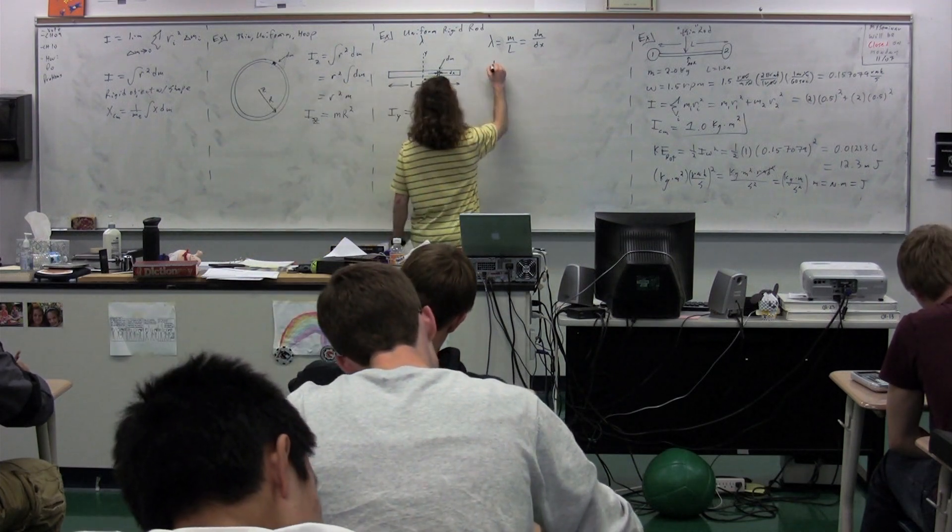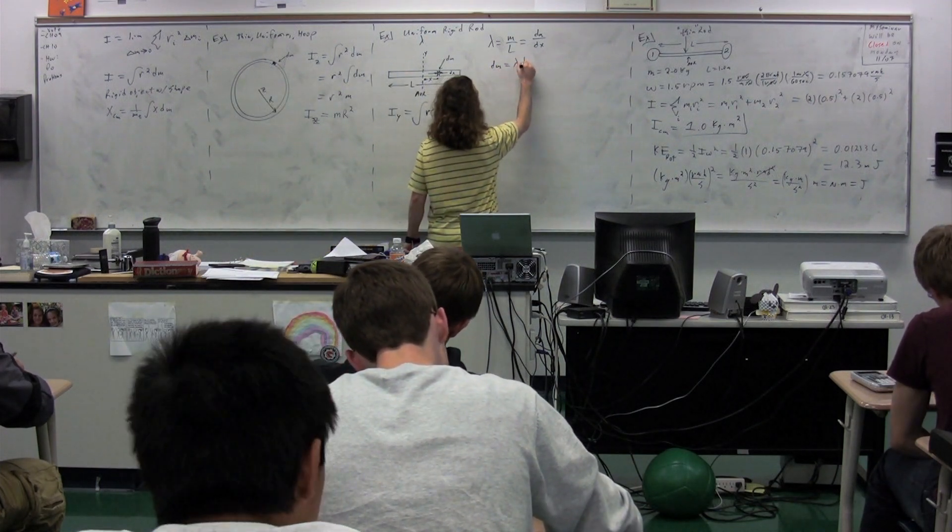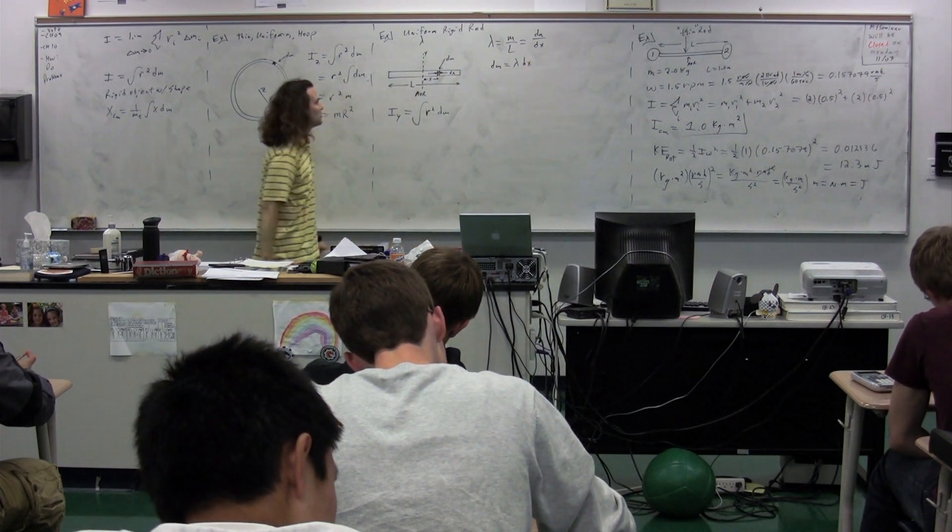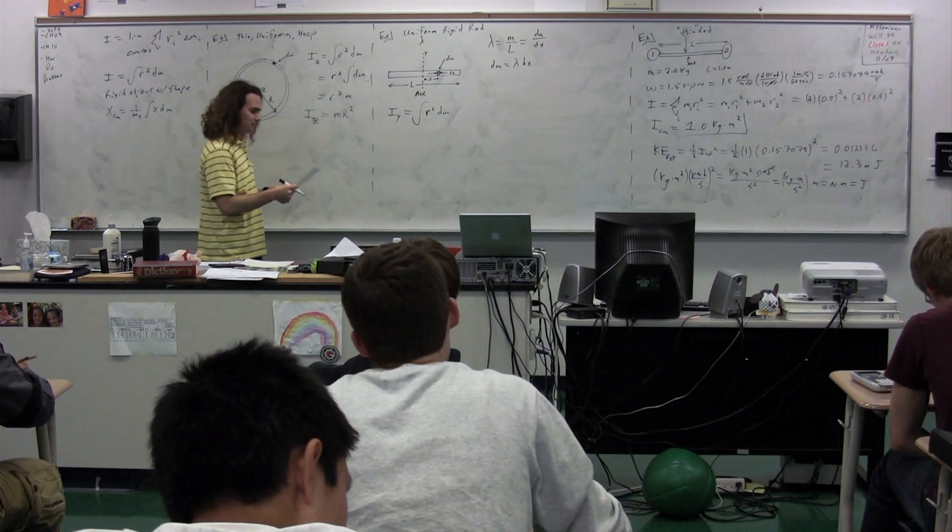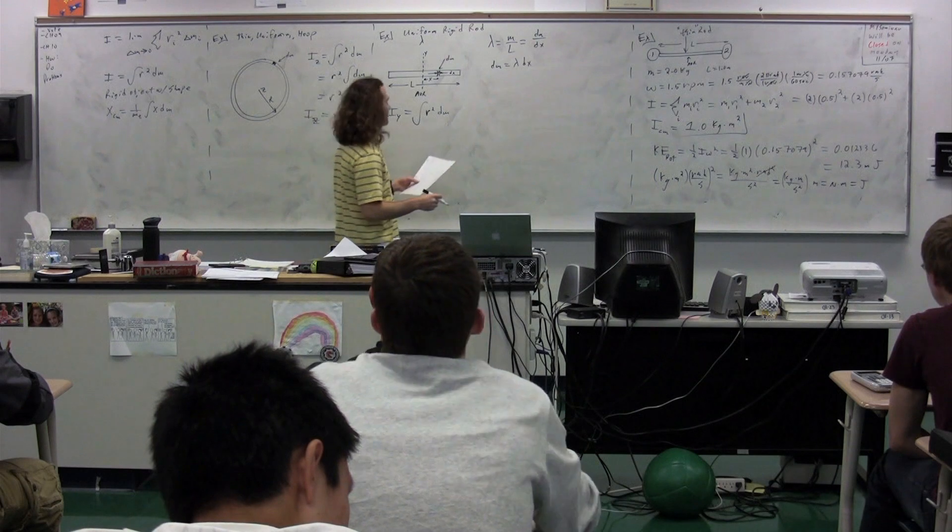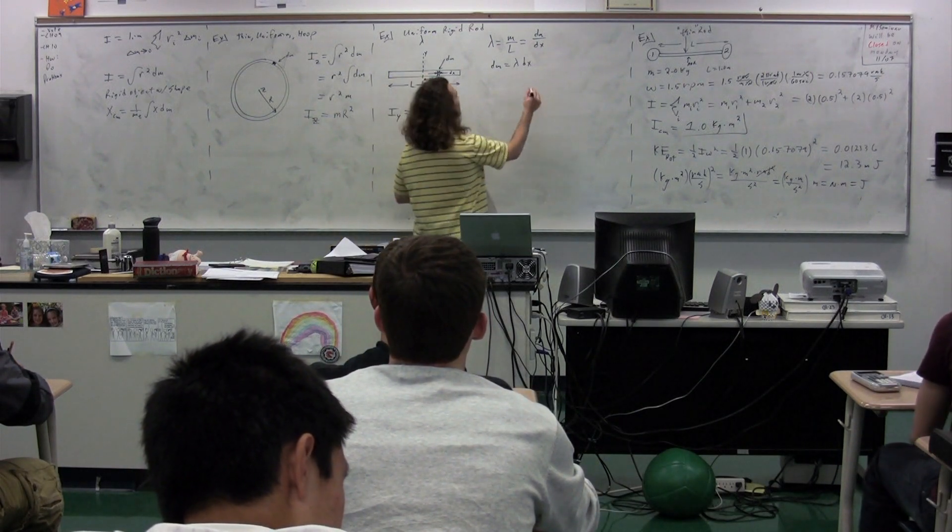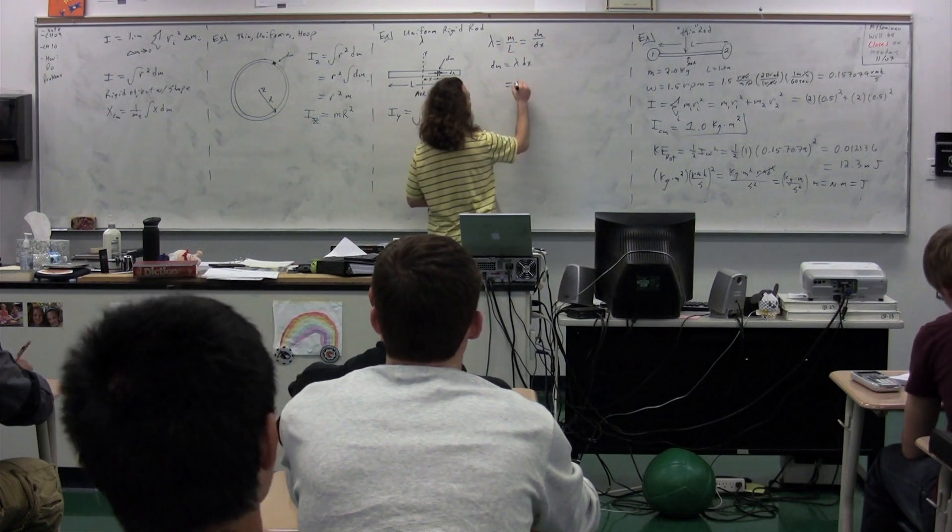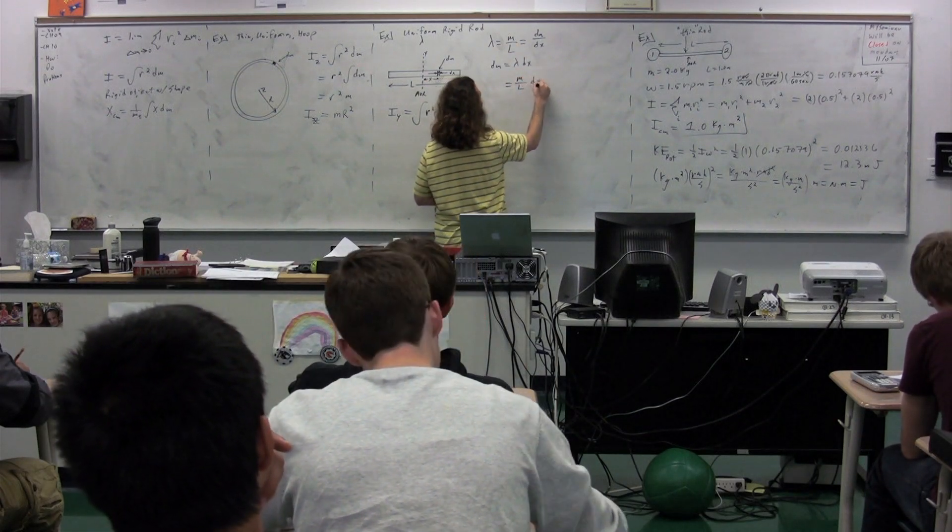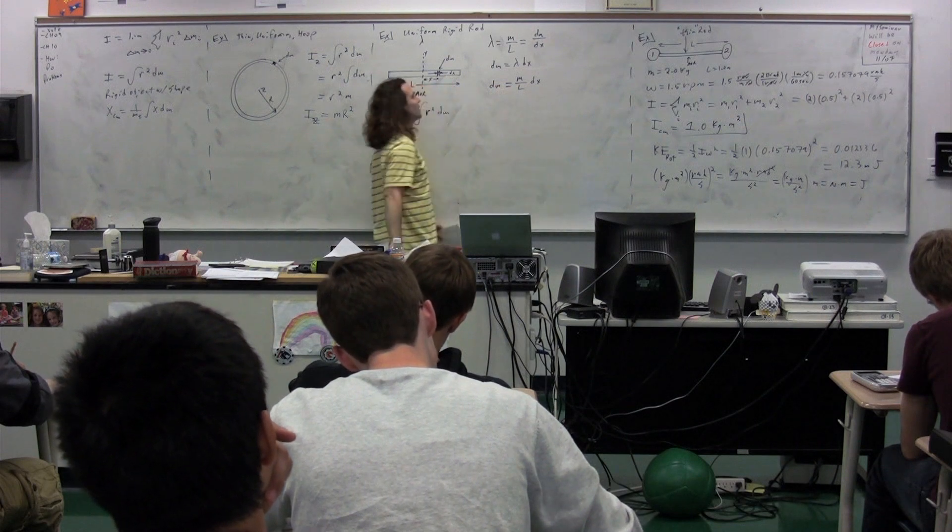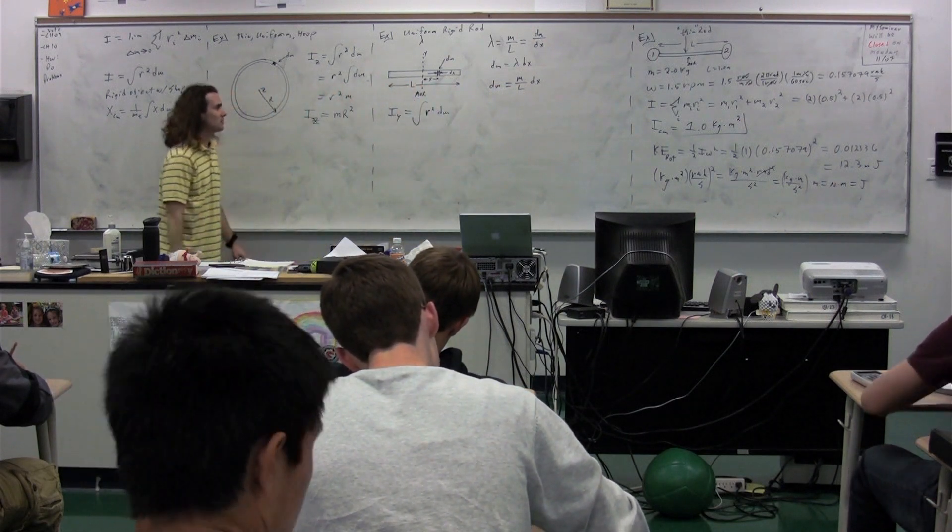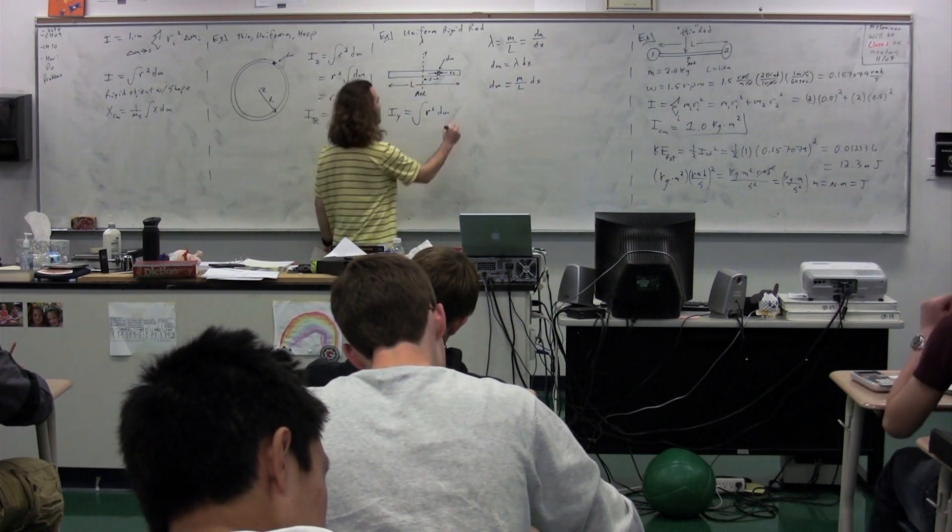dm then is equal to lambda times dx. We can substitute in for the lambda, because the lambda, well, let's do it in two steps. So the lambda is mass over length. So mass over length times dx. dm equals mass over length times dx. Okay, so we can now substitute into this equation.